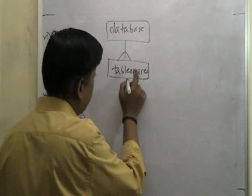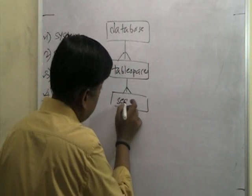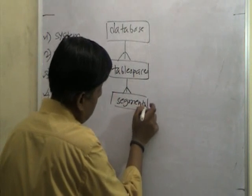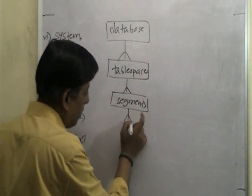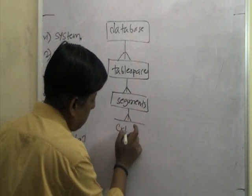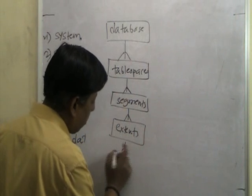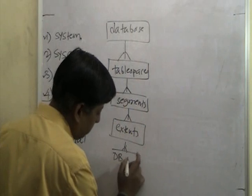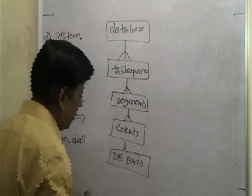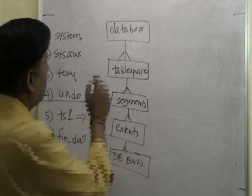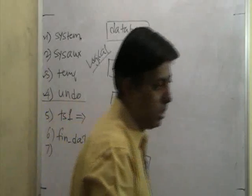Database is made up of tablespaces. Inside the tablespace there are segments. Inside the segments there are extents. Inside the extents there are blocks - these blocks are database blocks, DB blocks.